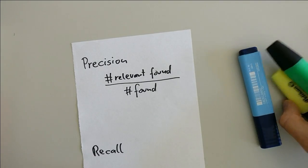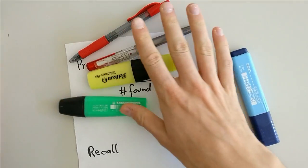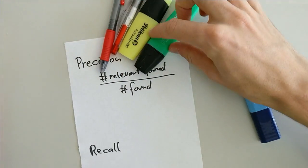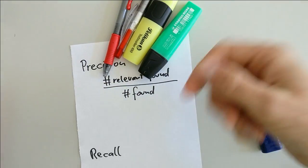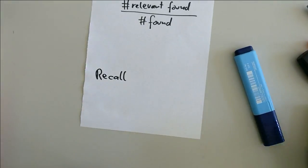If you search for text markers and you find something like this, four items are found, two of them are relevant. Then the precision is two divided by four, so 50% or 0.5.